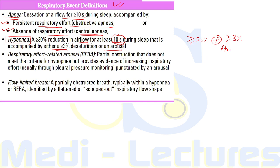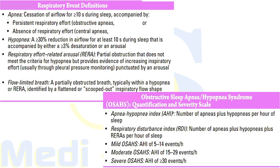The third definition is respiratory effort-related arousal, known as RERA. It includes partial obstruction that does not meet the criteria for hypopnea — less than 30 percent — but provides evidence of increasing respiratory effort through pleural pressure monitoring, punctuated by an arousal. Flow-limited breathing is a partially obstructed breath, typically within a hypopnea or RERA, identified by a flattened or scooped-out inspiratory flow shape.